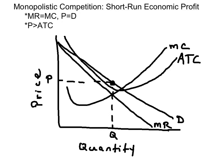Because there are many firms in a monopolistically competitive market structure that sell similar products, there is product differentiation, and each firm has some control over the price. Profits only exist in the short run; in the long run, the firm will break even.